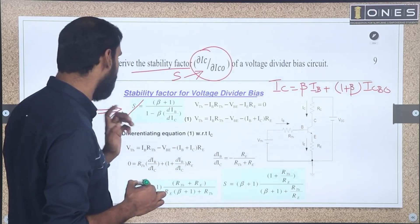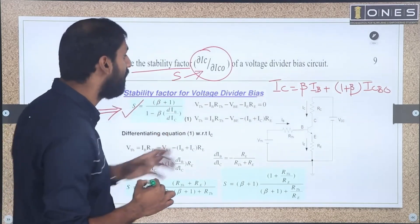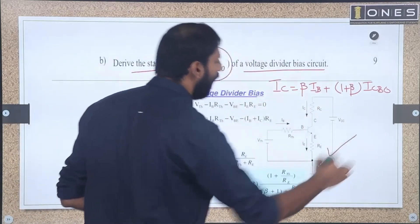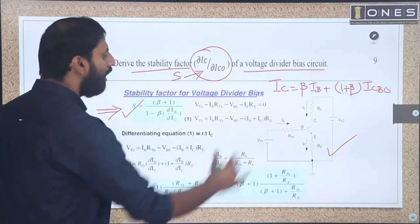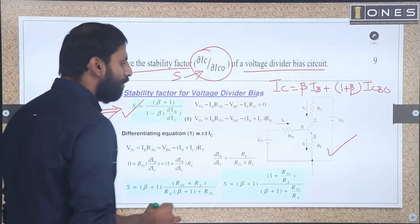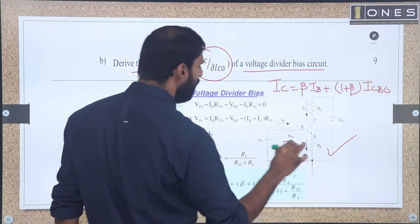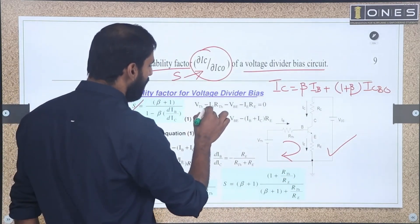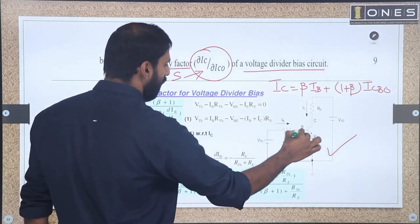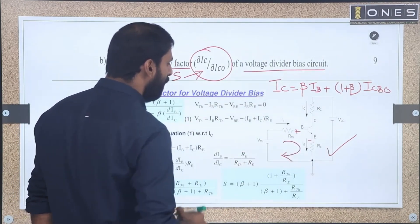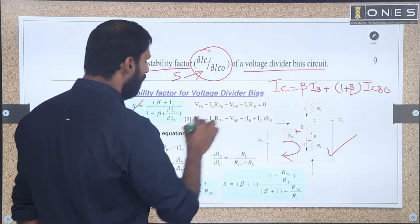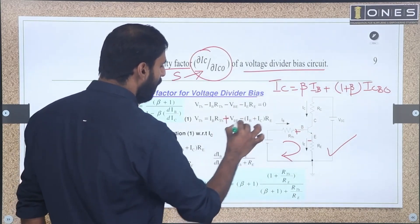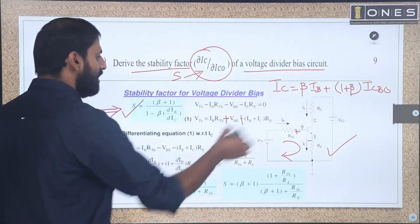Now we will discuss the special case of the voltage divider bias circuit. For the simplified diagram, we apply KVL on the input side: VTH minus IB times RTH minus VBE minus IE times RE equals 0. So VTH equals IB times RTH plus VBE plus (IB plus IC) times RE.